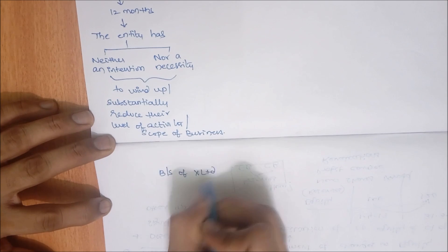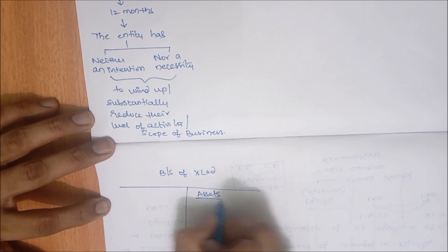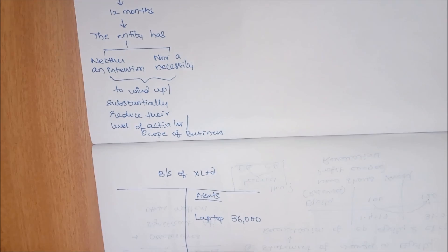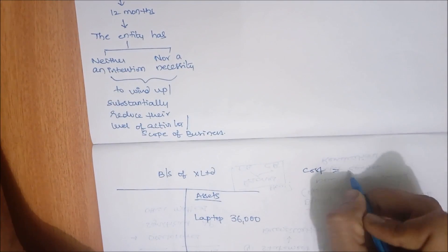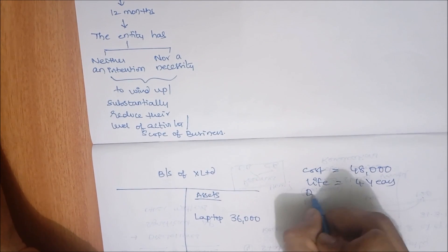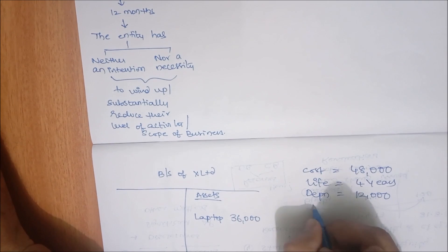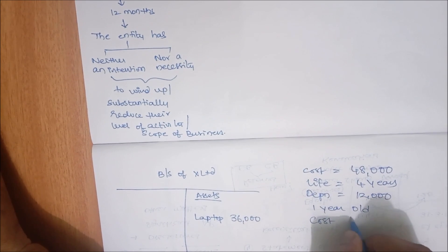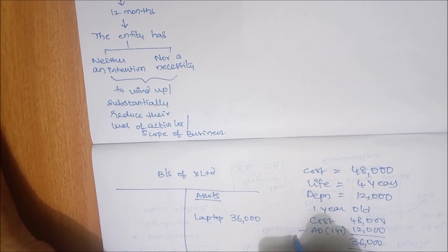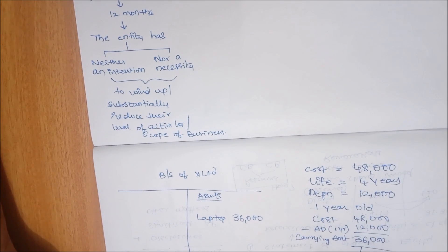Let me give a simple example. X Limited has prepared its balance sheet. On the assets side, one item — laptop — is shown at 36,000. They bought this laptop one year ago. The cost was 48,000, expected life is four years, so depreciation per annum is 12,000. After one year: 48,000 minus 12,000 accumulated depreciation equals 36,000 written-down value. This is called the carrying amount of the asset.